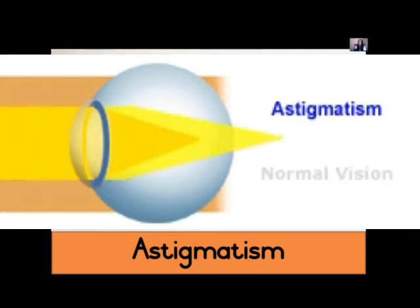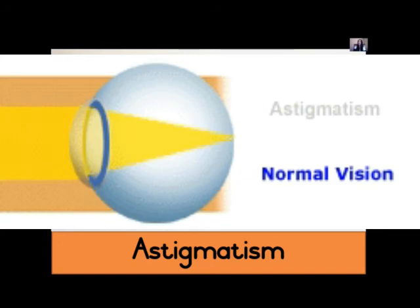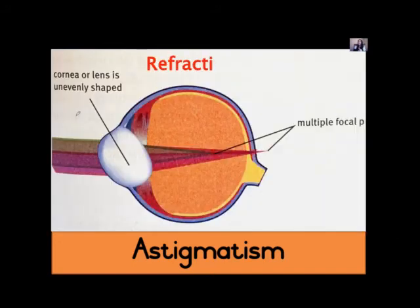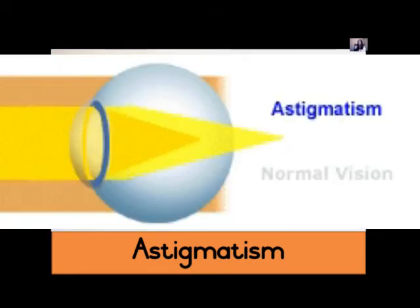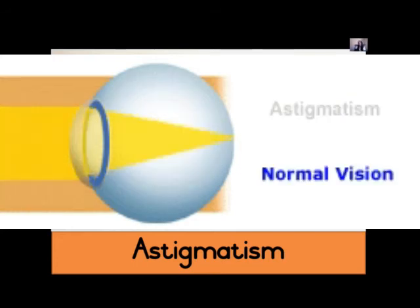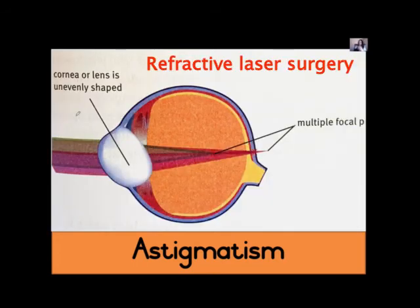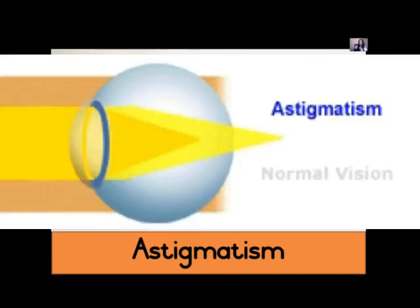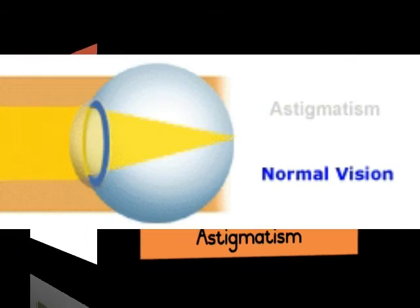The remedy for astigmatism is lenses that counteract or cancel out this irregularity. Another solution is refractive laser surgery — a method for correcting or improving vision. During refractive laser surgery, a laser is used to reshape the cornea so that the person will have the ability to see clearly again.